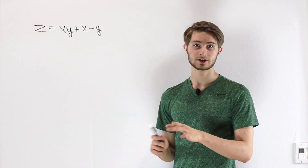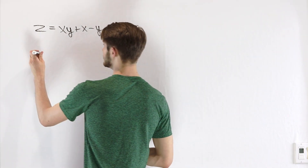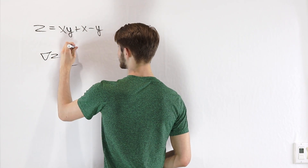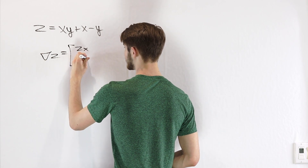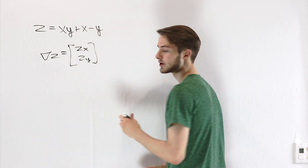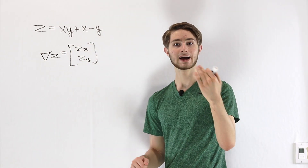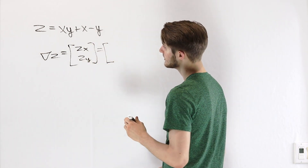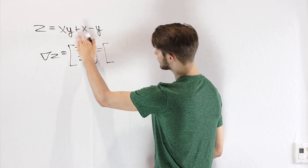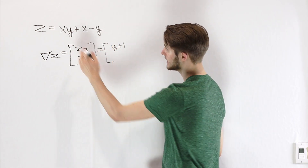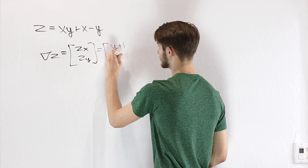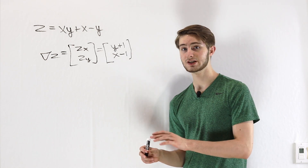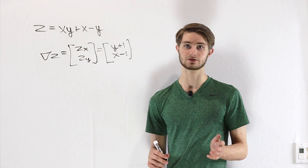One way that we think about how multivariable functions change is using the gradient vector. The gradient of z is defined as the partial derivative of z with respect to x and the partial with respect to y at a given input point. In this case, those partial derivatives give us y plus 1 for the x component and x minus 1 for the y component. The gradient vector is actually an example we've already seen of a vector field.